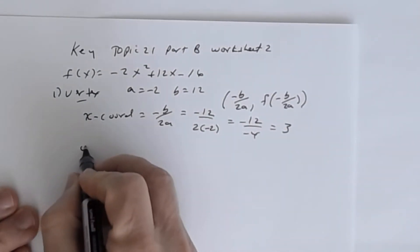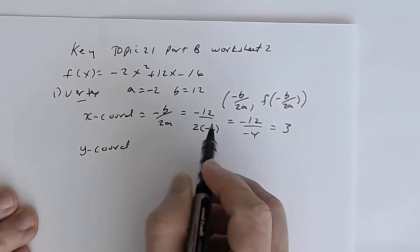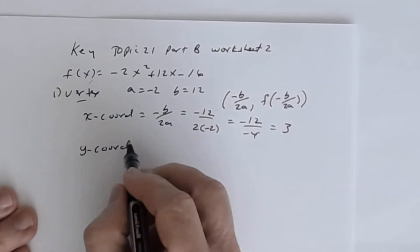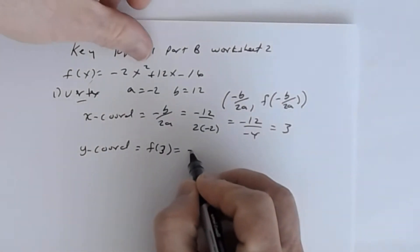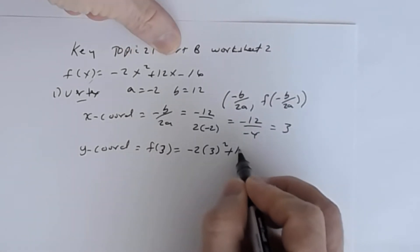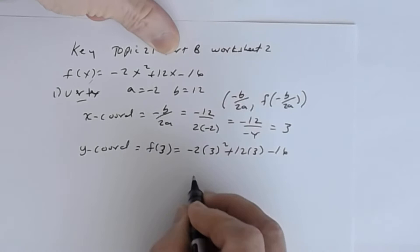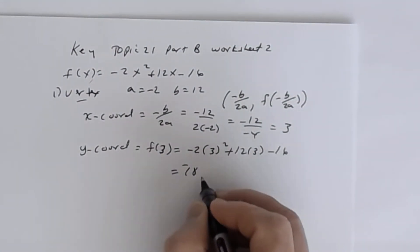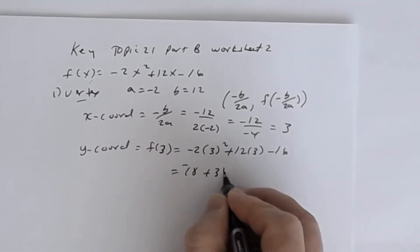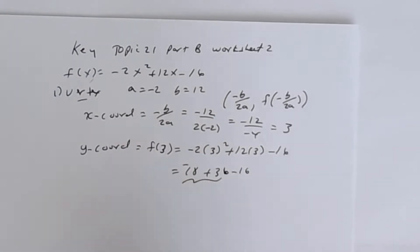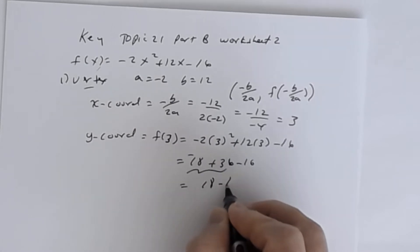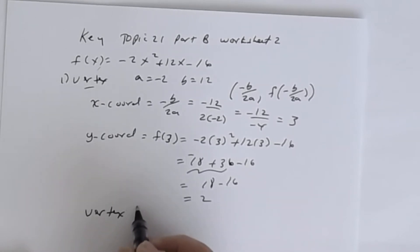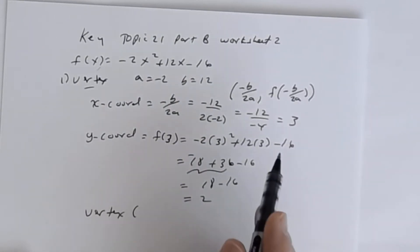Once you find the x-coordinate of your vertex, now you're going to find the y-coordinate. You're going to substitute 3 into x — basically, you're finding f(3). So f(3) = -2 times 3² + 12 times 3 - 16. 3² is 9; 9 times -2 is -18. Then 12 times 3 is 36, minus 16. -18 + 36 is 18, and 18 - 16 is 2. So the vertex is (3, 2).